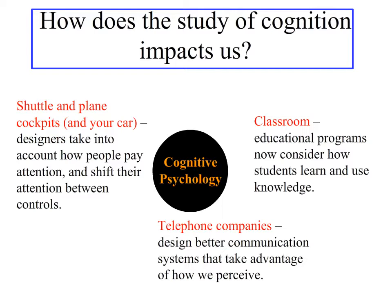How does the study of cognition impact us in our daily lives? There are a whole world of examples — I'll focus on three. First, the classroom: teachers and educators have taken knowledge of how we remember and learn information in order to make their educational programs and environments more enriching for students. Telephone companies are also interested in designing better communication systems that take advantage of how we perceive sound and, these days, visual information — our cell phones have both audio and visual capabilities.